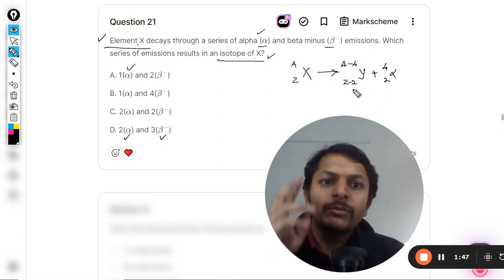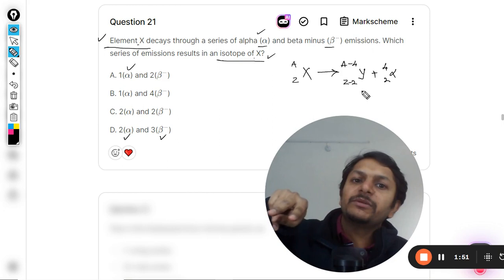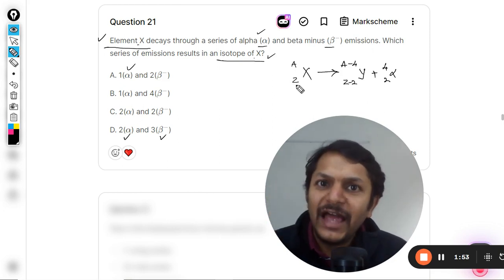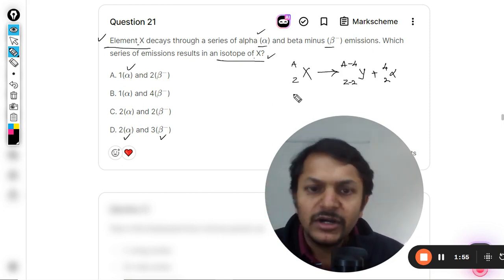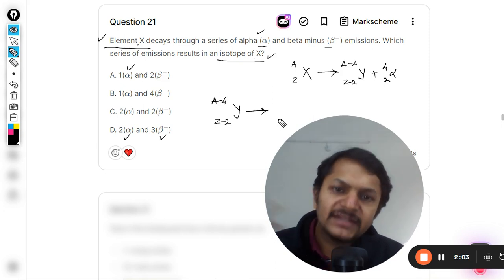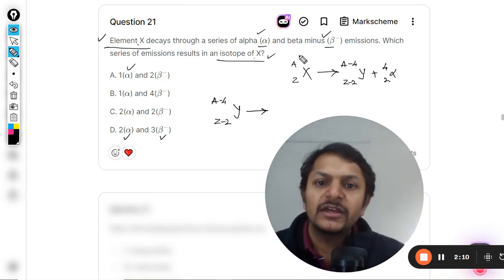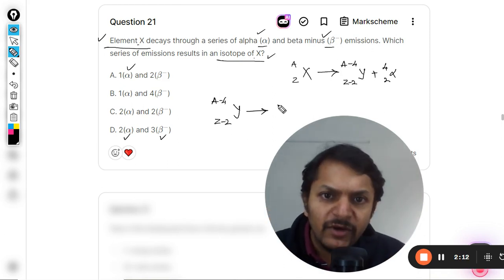Alpha has decayed, so the atomic number has now reduced by two. We want to increase the atomic number by two because you want to have Z as the atomic number again. Now a beta minus decay is happening. Whenever beta minus decay occurs, atomic number increases by one.